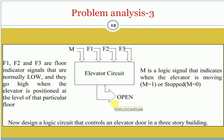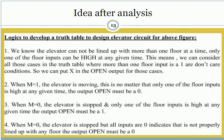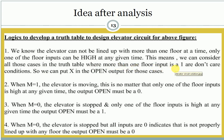We have to decide when the door will be open for these four inputs. We know that the elevator cannot be lined up with more than one floor at a time — that is not possible. Only one of the floor inputs can be high at any given time. That means we can consider all those cases in the truth table where more than one floor input is 1 as a don't care condition, so we can put don't care in the open output for those cases.